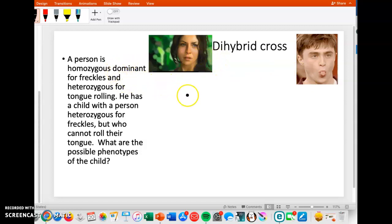Here we have a person who is homozygous dominant for freckles, so I'm going to make big F big F for freckles, and heterozygous for tongue rolling. So let's do T for tongue rolling and it's heterozygous, so we're going to do big T and little t.